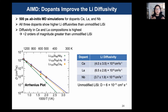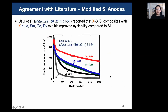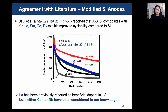To test if doped lithium-silicon alloys really have improved lithium diffusion, we estimated diffusivities from Arrhenius MD simulations. Indeed, our simulations predict that diffusivities increase by 1 to 2 orders of magnitude. From the literature, lanthanum doping has previously been tested and leads to increased capacity, but cerium and niobium have not yet been investigated to our knowledge. Hopefully somebody will pick this up and try it in the lab.